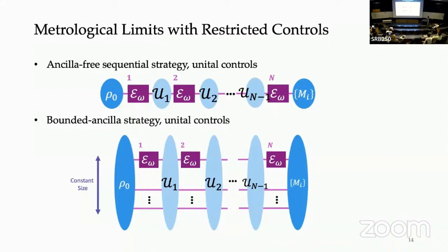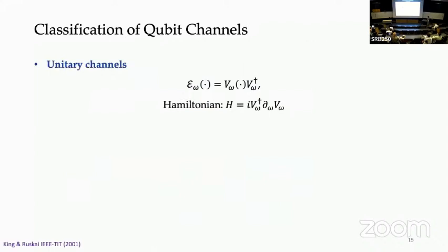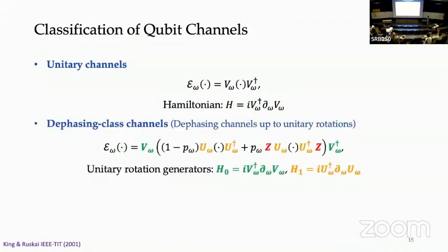Now I'll discuss the metrological limits under restricted control, focusing on qubit channels. Qubit channels can be classified into three classes, ignoring parameter dependence. The first is a unitary channel — just a single unitary rotation on your qubit. The second is the dephasing-class channel, meaning you can rotate the channel to a dephasing noise by applying unitaries U before and V after the dephasing channel. Bit-flip noise is also a dephasing-class channel since you can rotate X to Z.